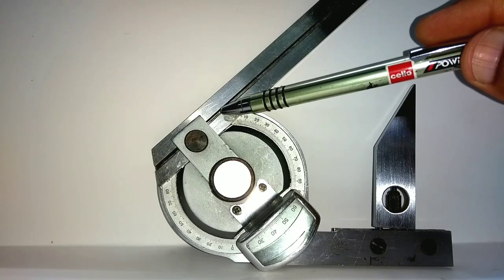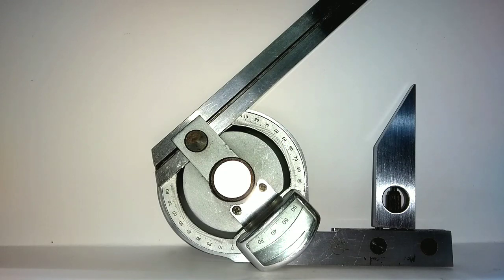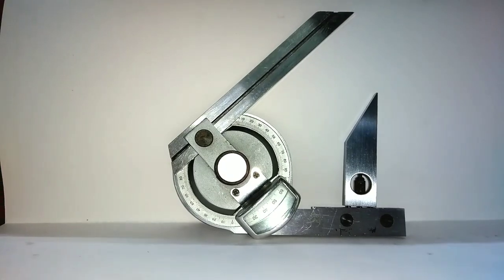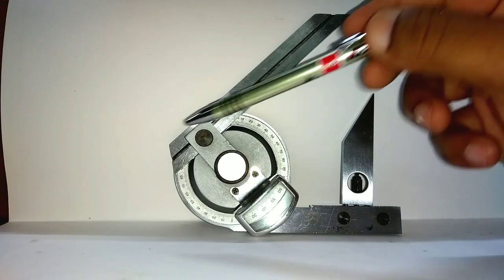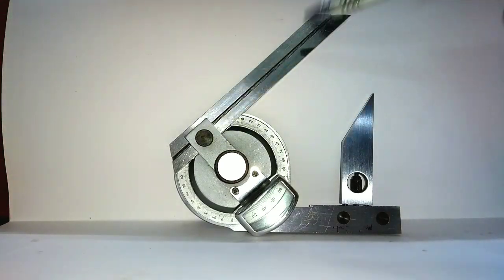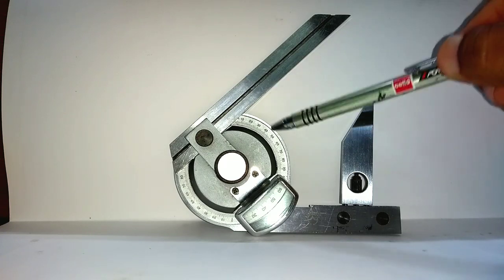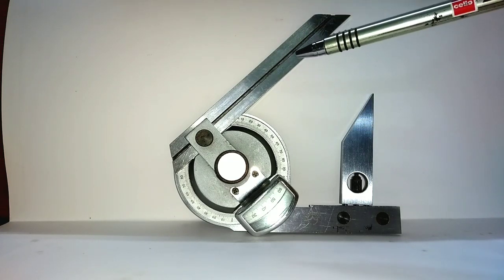Now why it is called as Bevel Protractor? Because of this Bevel Edge. You can see, this Bevel Edge. Due to this Bevel Edge, it is called as Universal Bevel Protractor. And Universal means it can measure acute as well as obtuse angle.